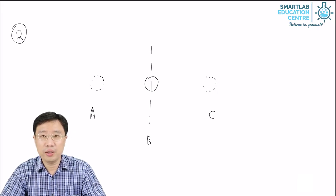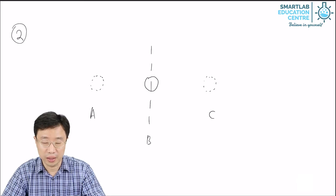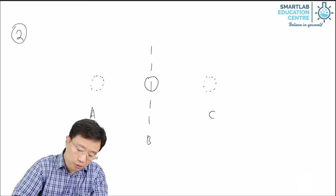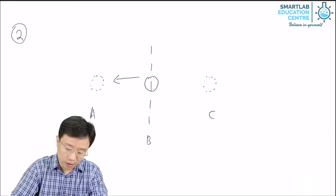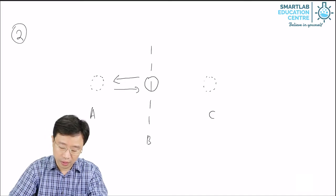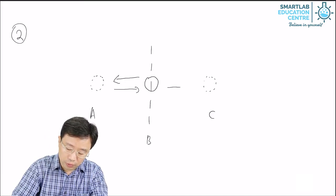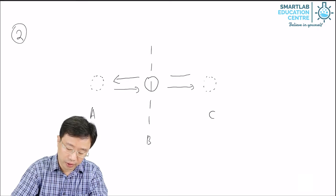When a particle in a solid is vibrating it may vibrate like this. From B it moves to A. From A it moves back to B. Then from B it moves to C and then from C it moves back to B.